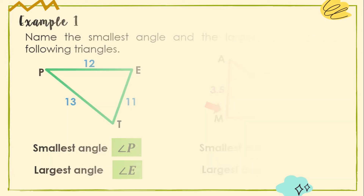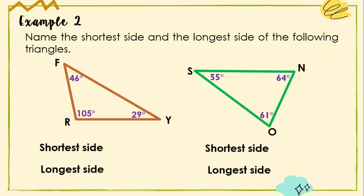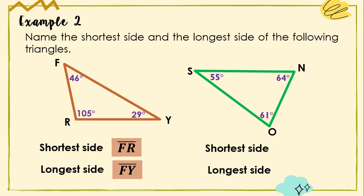Let us have example number 2, where Triangle Inequality Theorem 2 will be applied. In triangle FRY: Angle F measures 46°, Angle R measures 105°, and Angle Y measures 29°. Its shortest side is FR, since it is opposite the smallest angle Y. FY is the longest side since it is opposite the largest angle R.